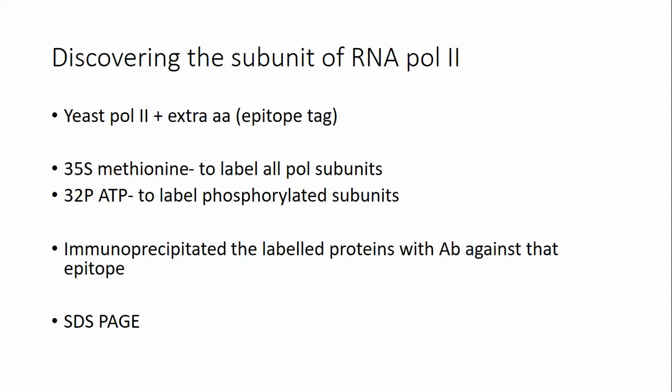The subunits of RNA Polymerase II were discovered using yeast Pol II, to which seven extra amino acids were attached by adding nucleotides at the end of the gene. The polymerase subunits were labeled using methionine tagged with 35S sulfur, and labeled ATP using 32P phosphorus was used to label phosphorylated subunits.